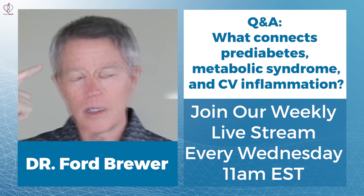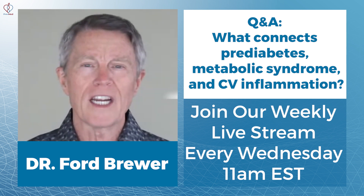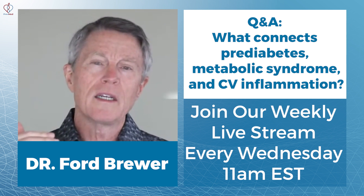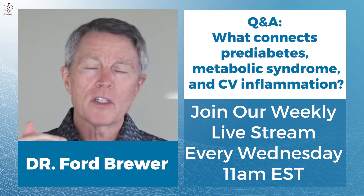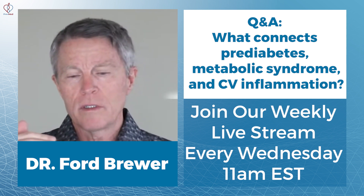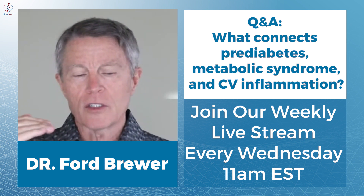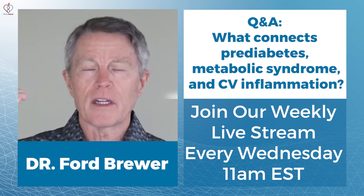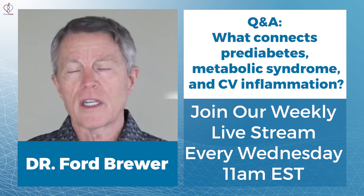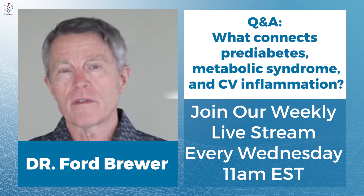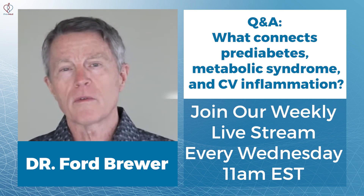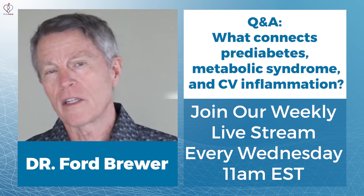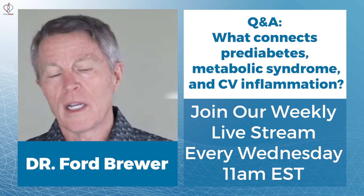The nucleus in our brain that's supposed to read our blood sugar level changes. It begins to adapt to higher levels and we get used to having levels of 120, 140, 160, 180, 200, and more.